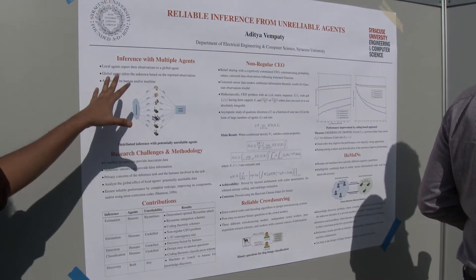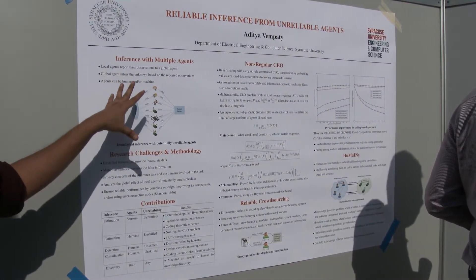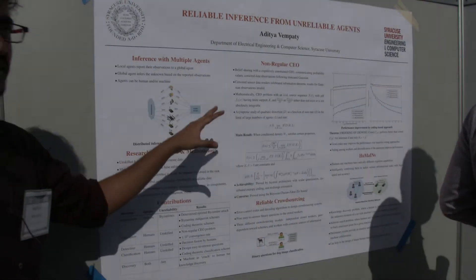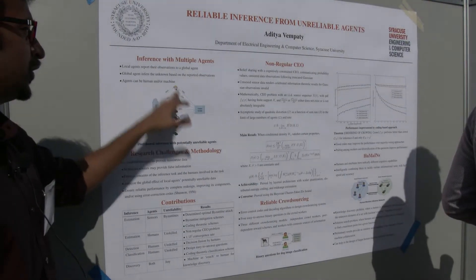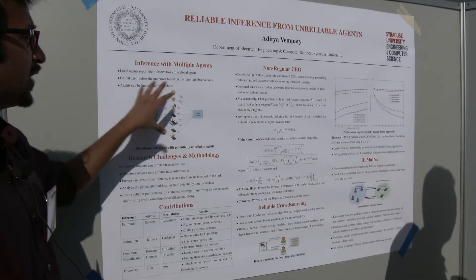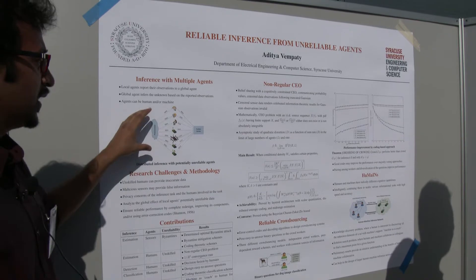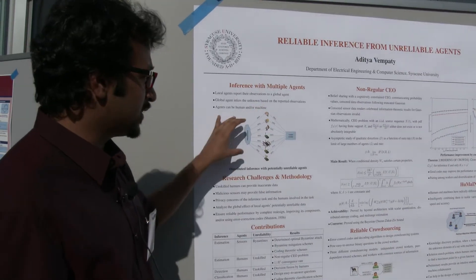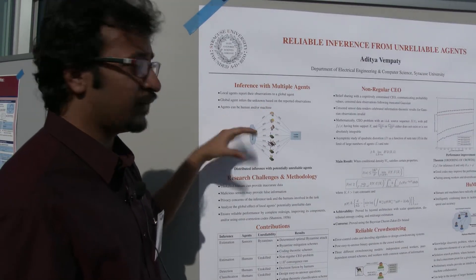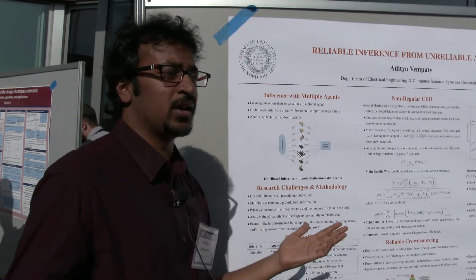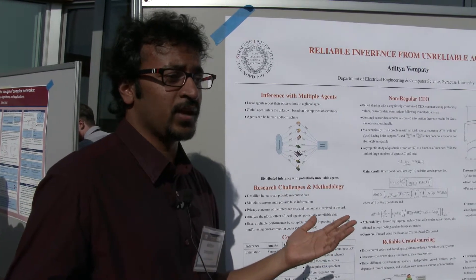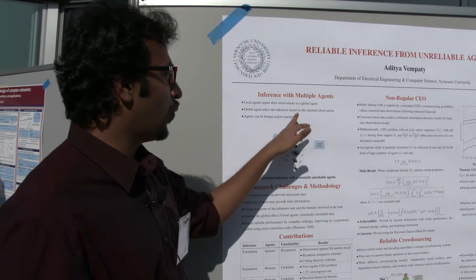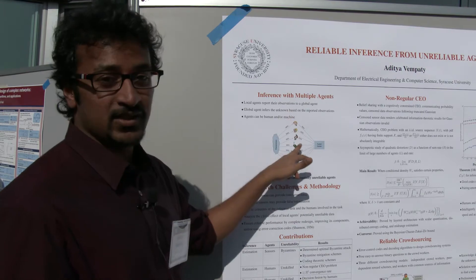Let's look at the situation when you're trying to have inference from multiple agents. I use the word agents because they could be humans or machines. When you have a system where multiple agents are observing a phenomenon — whether it's detection, an estimation — the question is: what happens if these agents are unreliable?